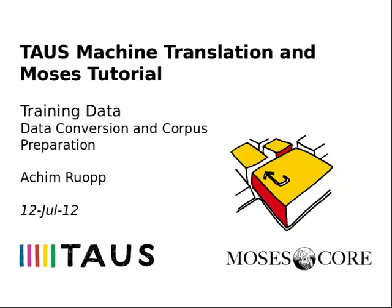Welcome to the Taos MOSES Core Machine Translation and MOSES tutorial. Training data is an essential component in training statistical MT systems. In this module, we will talk about the training data format the MOSES SMT engine expects and how you can convert your data into the expected format. For a general overview of how MOSES uses this data and where you can get such data from, please see the modules Principles of Machine Translation and Data Types and Sources that are also part of this series.